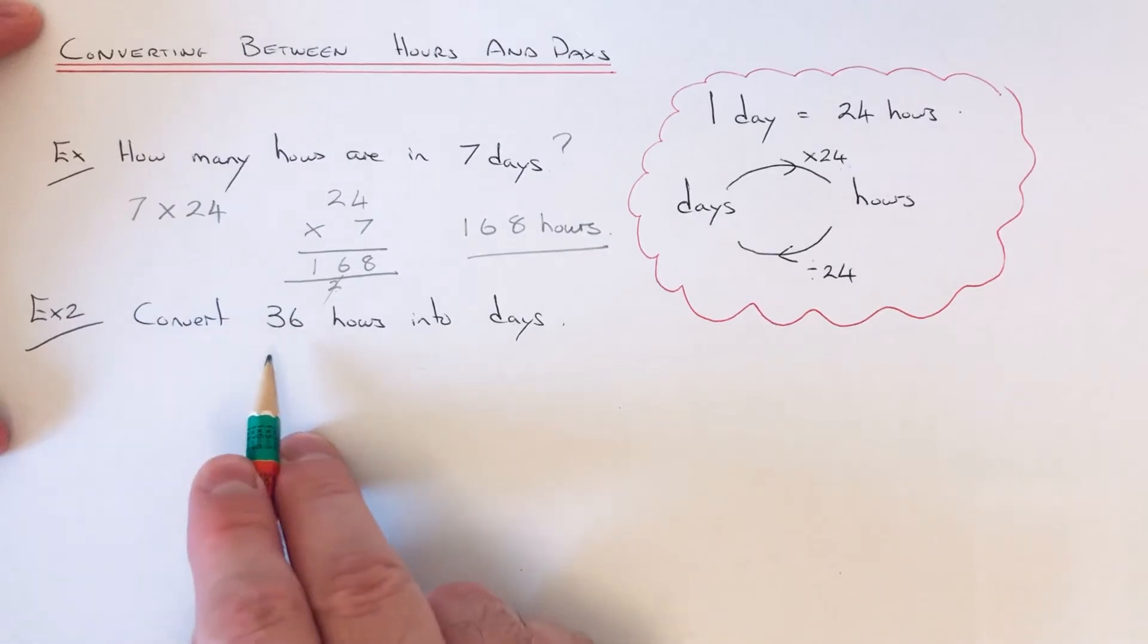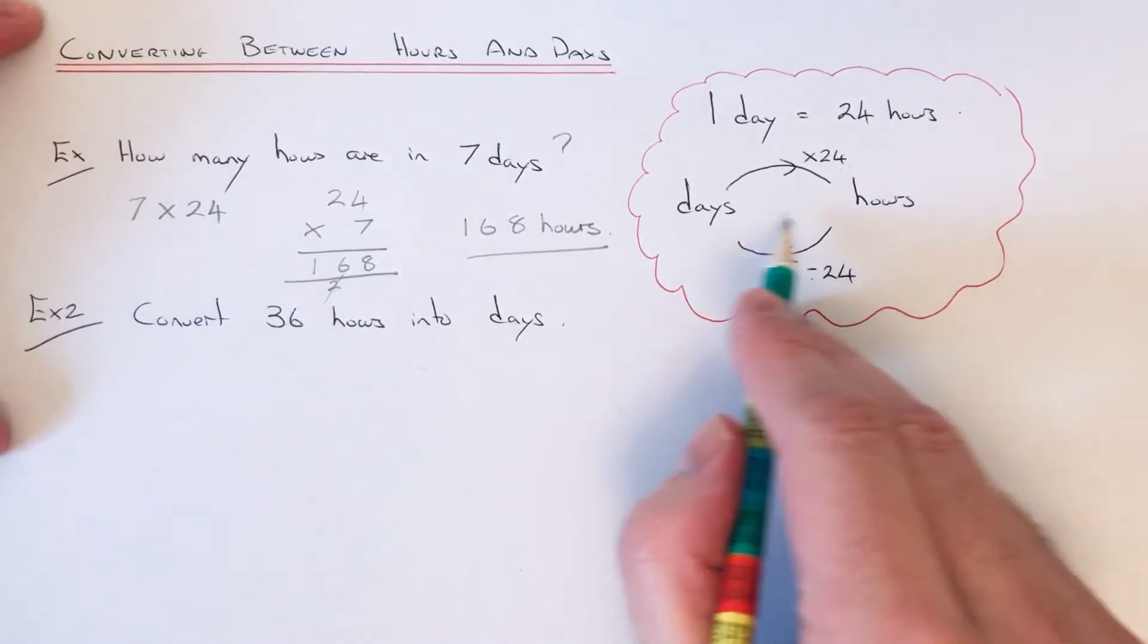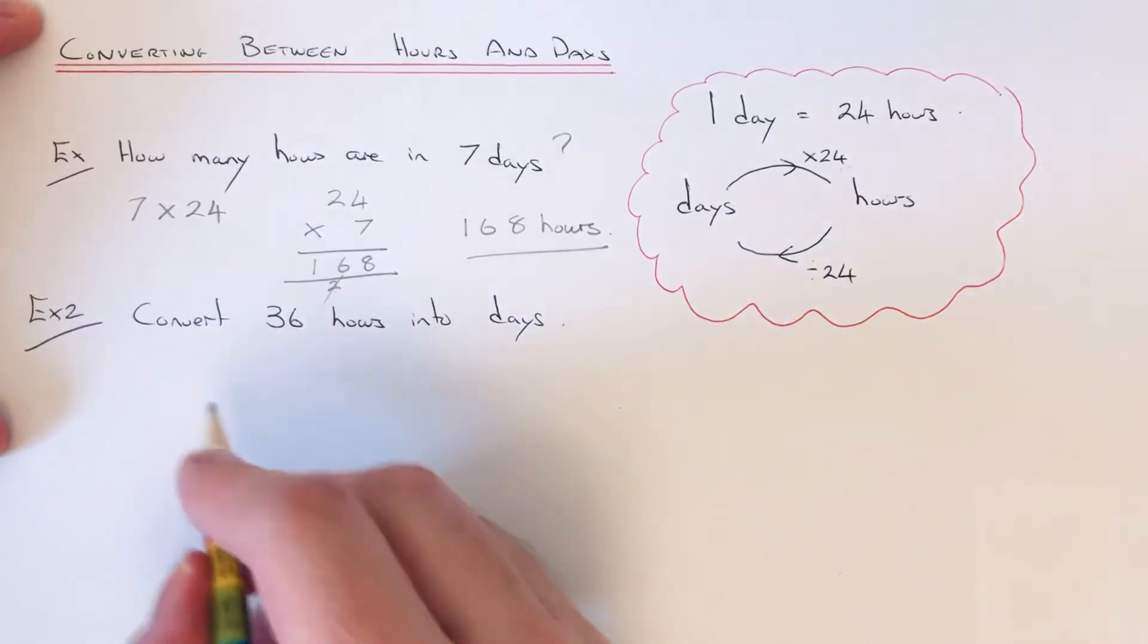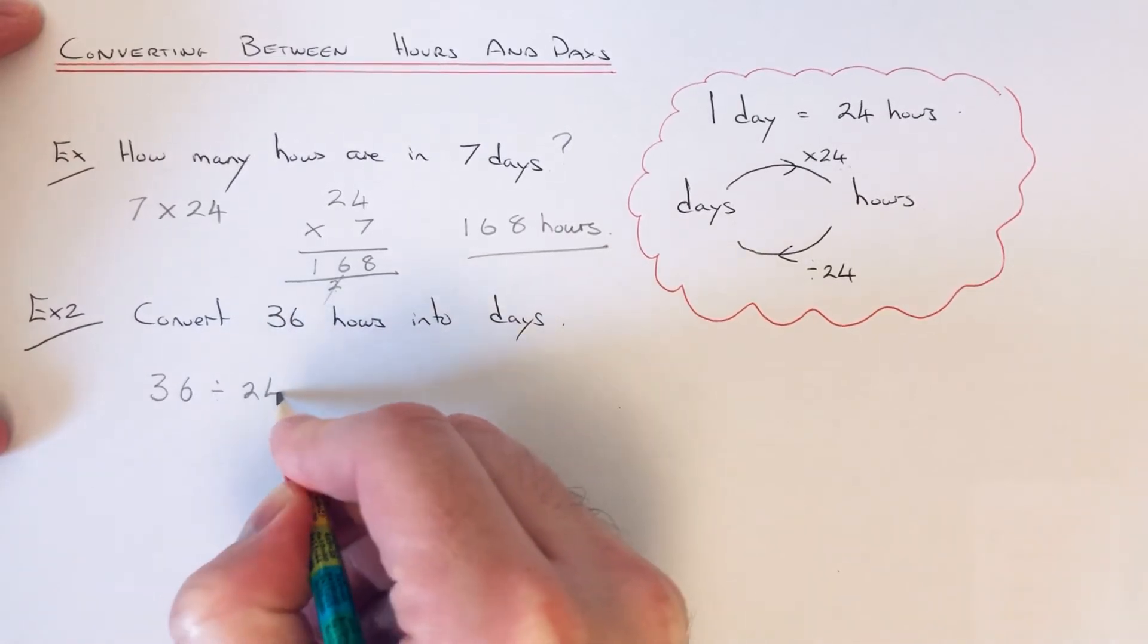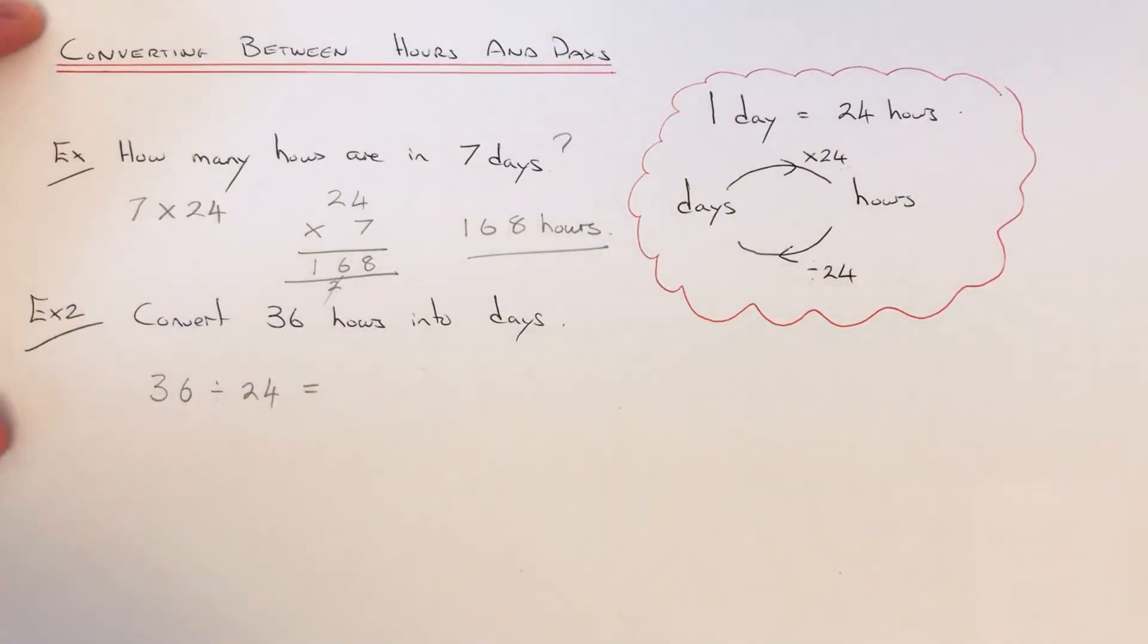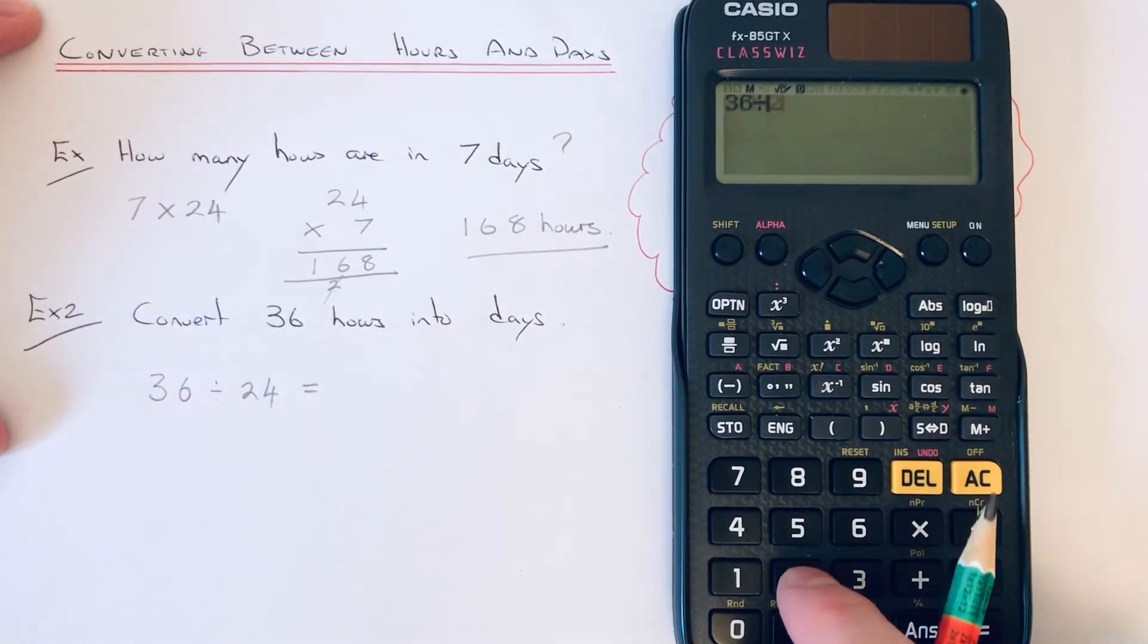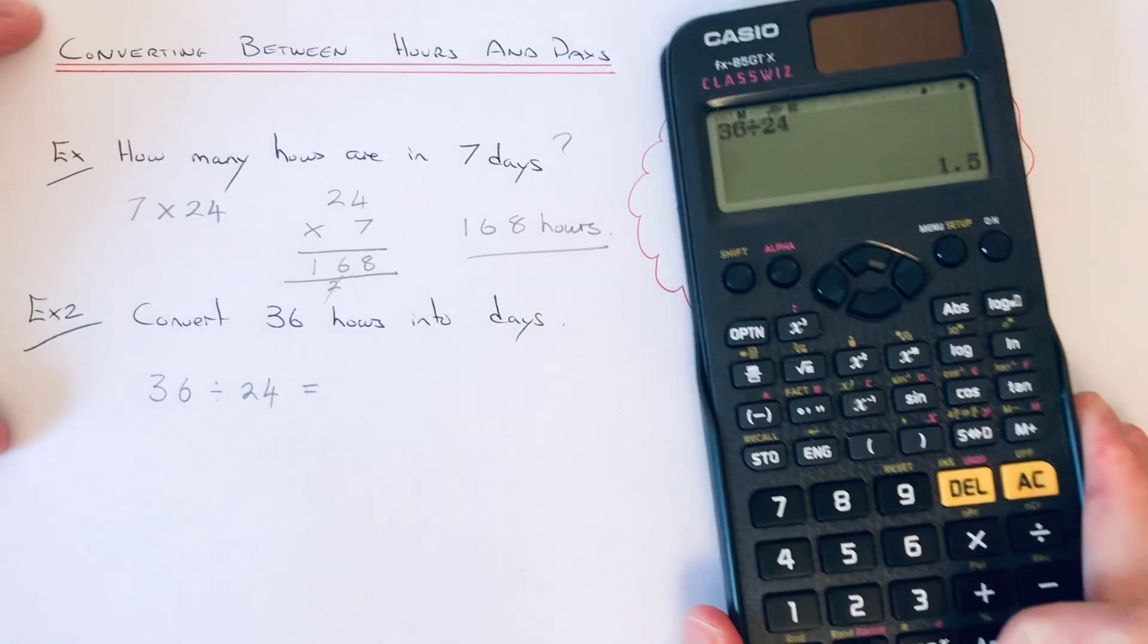Let's have a look at example two. We need to convert 36 hours into days. Hours into days, you divide by 24. So we do 36 ÷ 24. It's probably best to use a calculator on this one. 36 ÷ 24 is 1.5, so that is one and a half days.